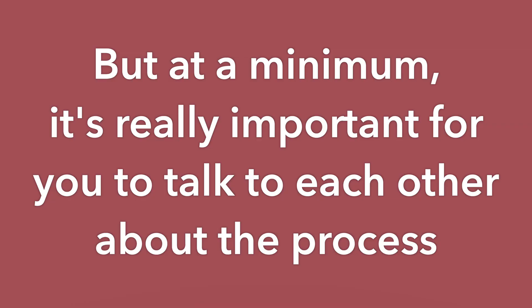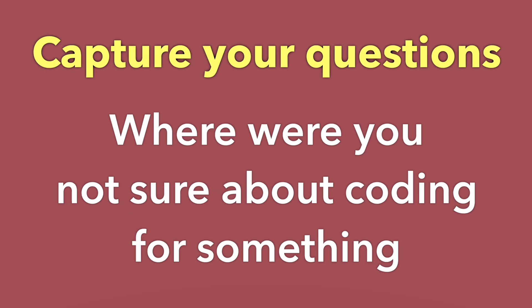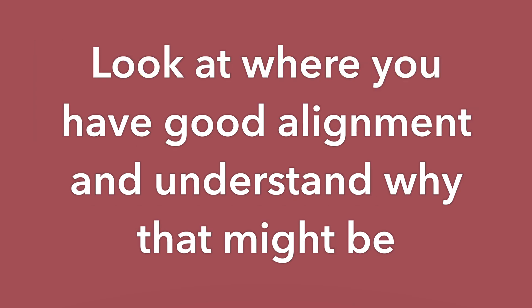At a minimum, it's really important for you to talk to each other about the process, capture your questions, and consider where you were not sure about coding for something in particular. Look at where you have good alignment and understand why that might be. As part of this process, you might change your codebook — update the definitions of particular codes — so that you more fully understand them as a team and can more reliably and validly code for those concepts.